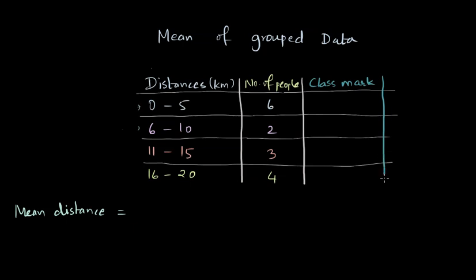So class mark, and class mark is basically the mean of these two values. So if we wanted to calculate class mark for 0 to 5, I'll just show for the first one, we'll add these two divided by two, because there are only two quantities that we're looking at, and it will be 2.5. Similarly, the class mark for 6 to 10 is going to be 6 plus 10 divided by 2, and it gives us 8.